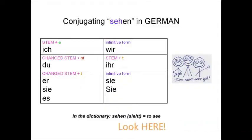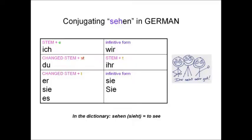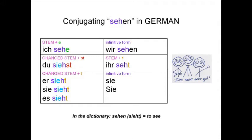This is the verb sehen — it means to see. In the dictionary it would show you sehen, sieht. Ich sehe. Du siehst. Er sieht. Wir sehen. Ihr sieht. Sie sehen.